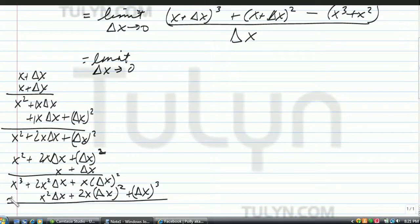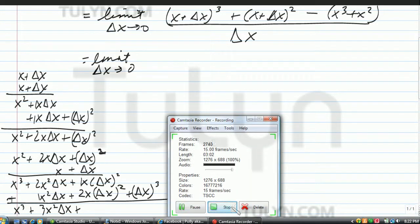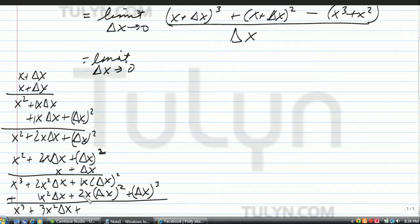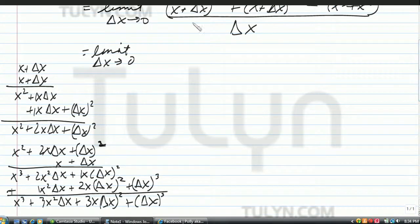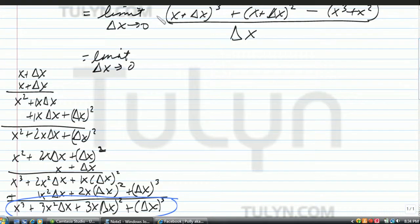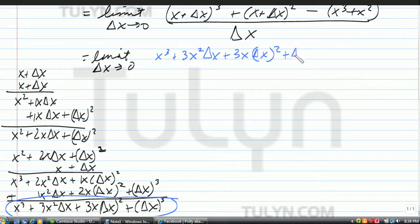Add them all together. You get x to the third plus — collecting the x squared delta x terms: 2x squared delta x plus 1x squared delta x is 3x squared delta x. Then 1x delta x squared plus 2x delta x squared is 3x delta x squared, plus delta x to the third. So x plus delta x to the third equals x to the third plus 3x squared delta x plus 3x delta x squared plus delta x to the third.